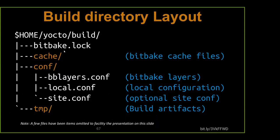Once you get into your build directory, you'll notice there's a lock file — BitBake uses lock files the same as make and other tools. There's a cache, which is what BitBake uses to keep track of what it's going to build. Then there's a conf directory. We have a bblayers.conf — that tells us what layers we're going to include in our build. We're going to have a local.conf — that tells us what configuration this particular machine is going to use, including downloads directory, shared state cache, and parallel thread count.